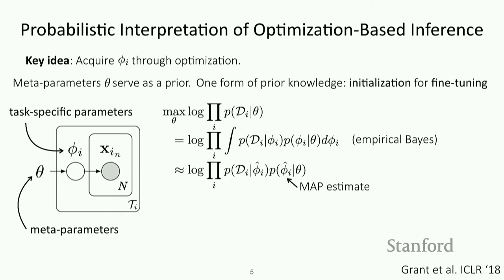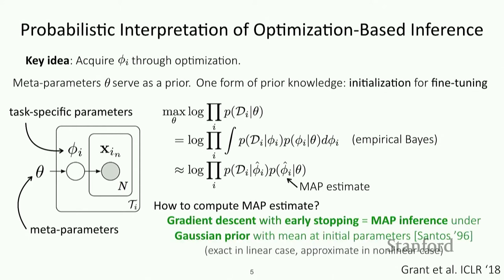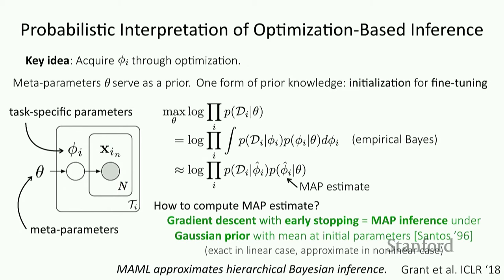The question becomes: how do we compute the MAP estimate? It turns out that under specific conditions, gradient descent with early stopping corresponds to MAP inference under a Gaussian prior with mean at the initial parameters and a variance determined by the number of gradient steps and the step size. This is exact in the linear case and approximate in the nonlinear case. So the inner loop of the MAML objective corresponds to getting the MAP estimate by running gradient descent with early stopping. You can loosely view MAML as approximating hierarchical Bayesian inference in this graphical model, involving the approximation of using the MAP estimate and treating gradient descent with early stopping as MAP inference in the nonlinear case with neural networks.